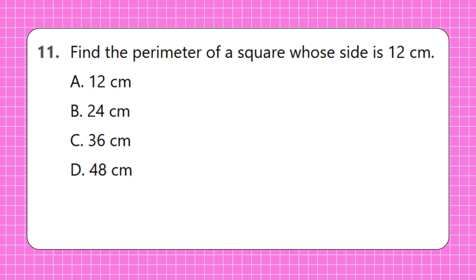11. Find the perimeter of a square whose side is 12 cm. A. 12 cm, B. 24 cm, C. 36 cm, D. 48 cm.